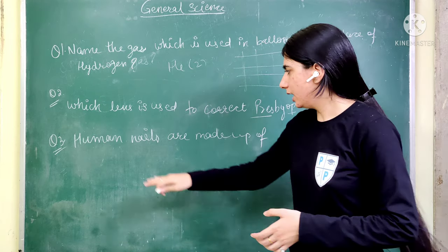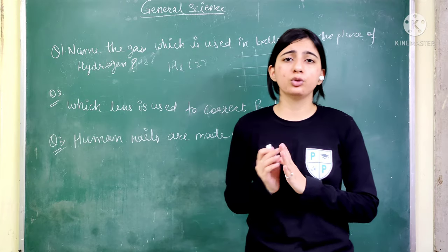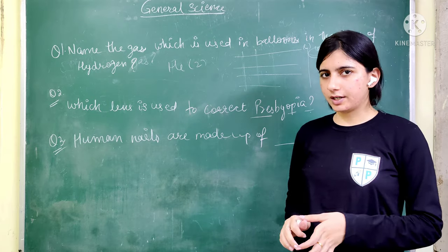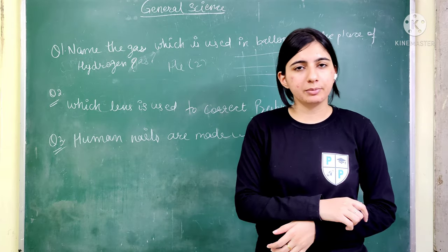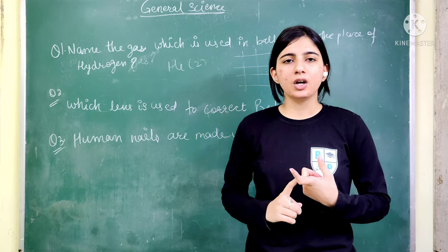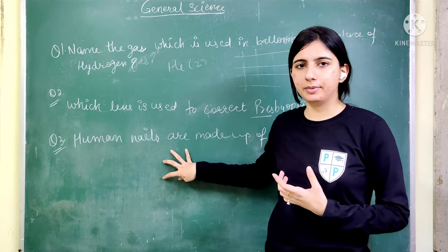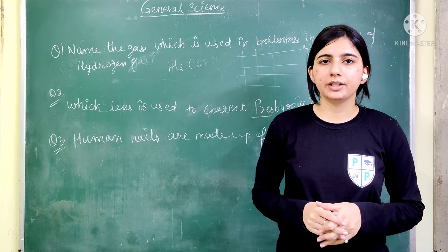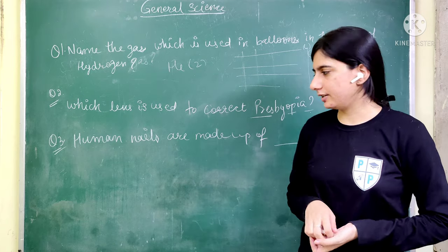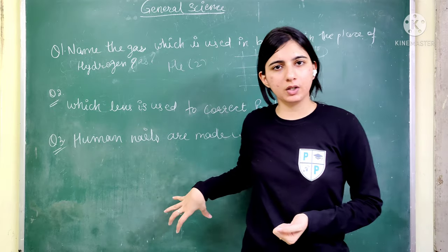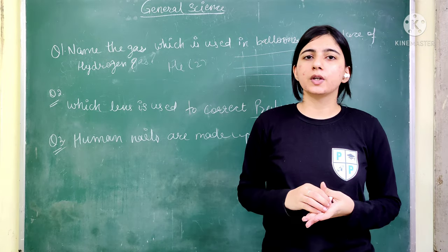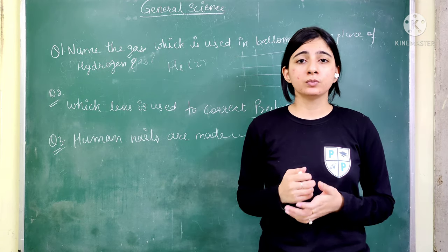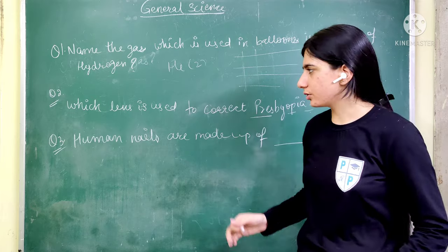Third question: human nails are made up of what material? The answer is keratin. Keratin is also what hair is made of, so both hairs and nails are made up of keratin. Keratin is a protein made up of dead cells. This is the reason that when we cut our hair and nails, we don't feel any pain.